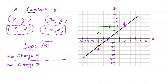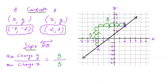Since A is to the left of B, I start with A. My rise, or change in y, is five units. My run, or change in x, is also five units. So the slope is five over five, which reduces to one. So the slope of line AB is one.